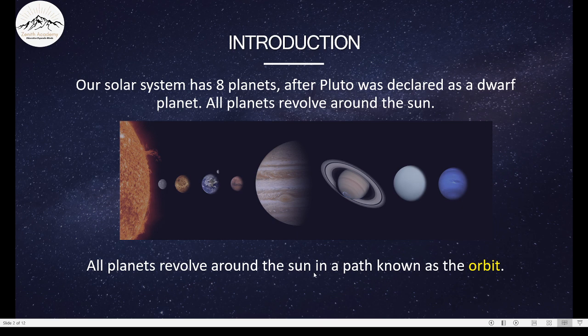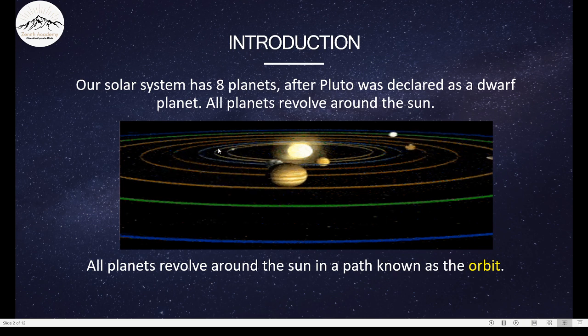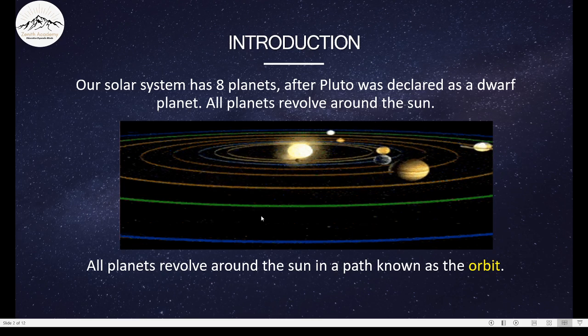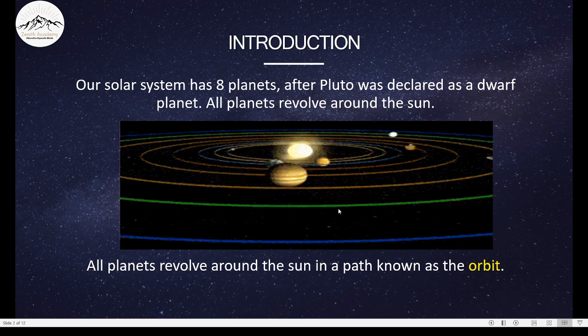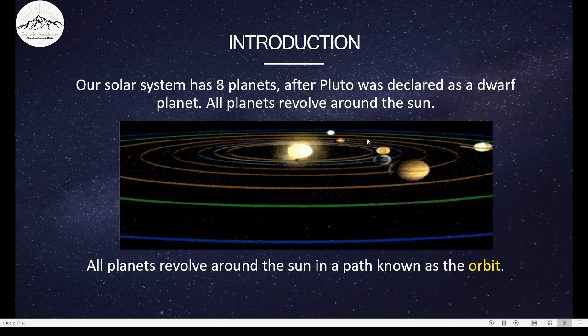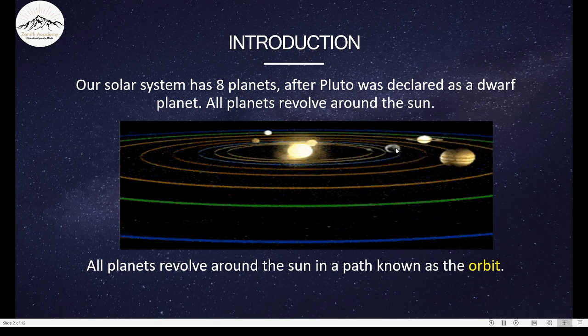All planets revolve around the sun in a path known as the orbit. So here, these rings that you see are actually the orbits of the planets. This green one here is the orbit of Uranus. This blue one here is the orbit of Neptune. We can also see Earth revolving around the sun. Now, let's learn a bit about our planet Earth.